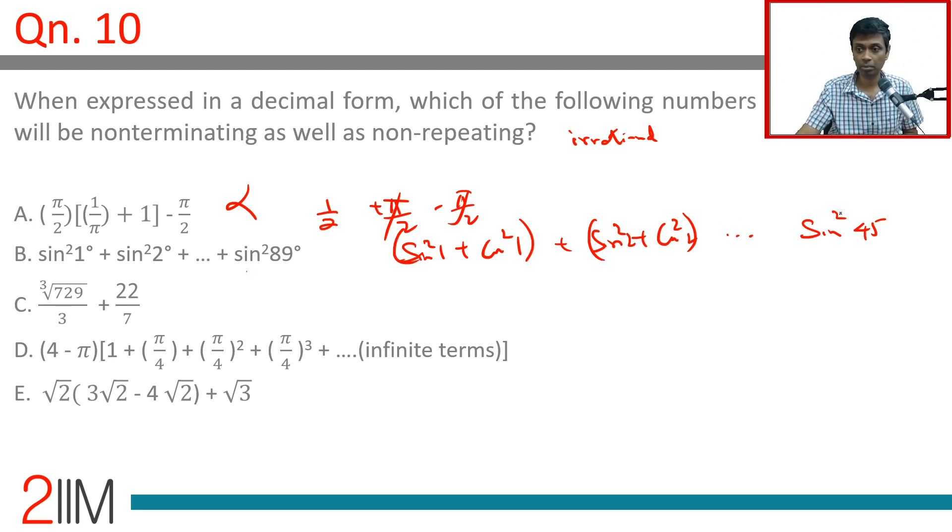This becomes 1 + 1 + 1 + ... some number of times, plus 0.5. That's some natural number plus 0.5, which is rational. This is not it.